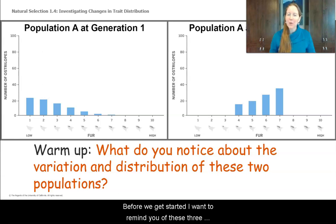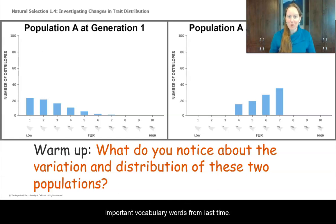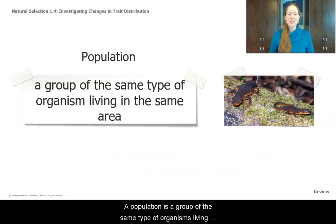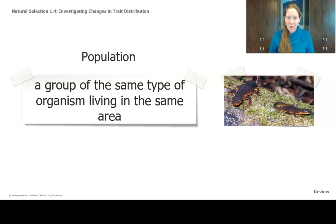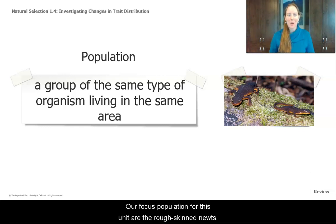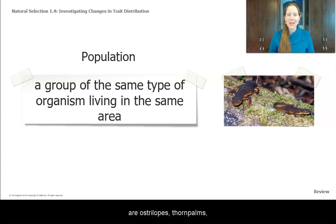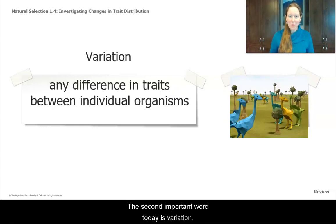Before we get started, I want to remind you of the three important vocabulary words from last time. The first important word to review is population. A population is a group of the same type of organism living in the same area. Our focus population for this unit are the rough-skin newts, and the populations we'll be looking at in the sim are the Australopes, the Thorn Palms, and the Carnival.